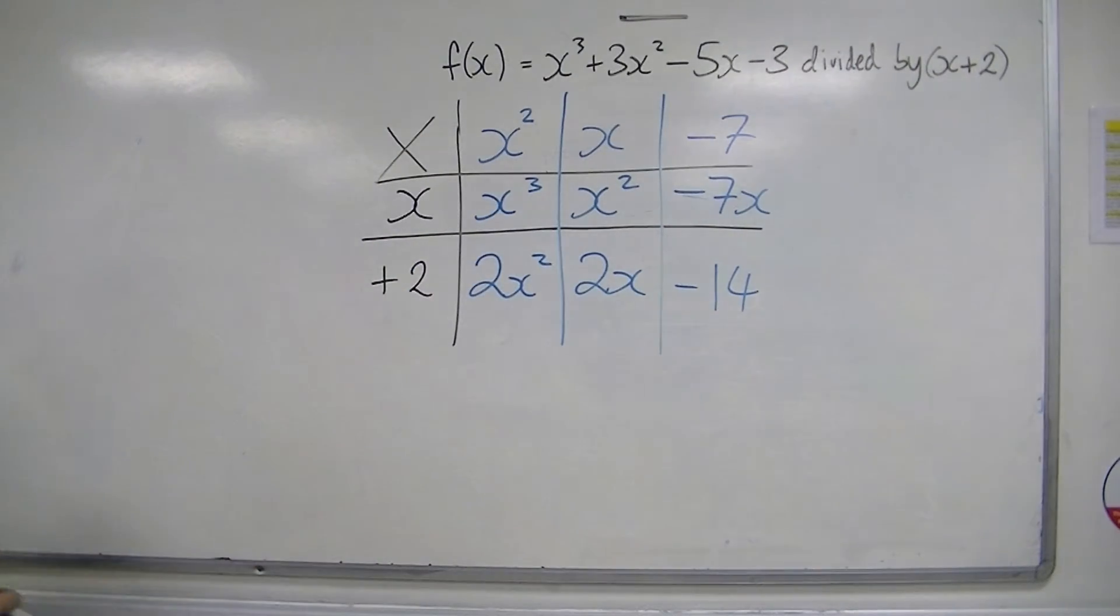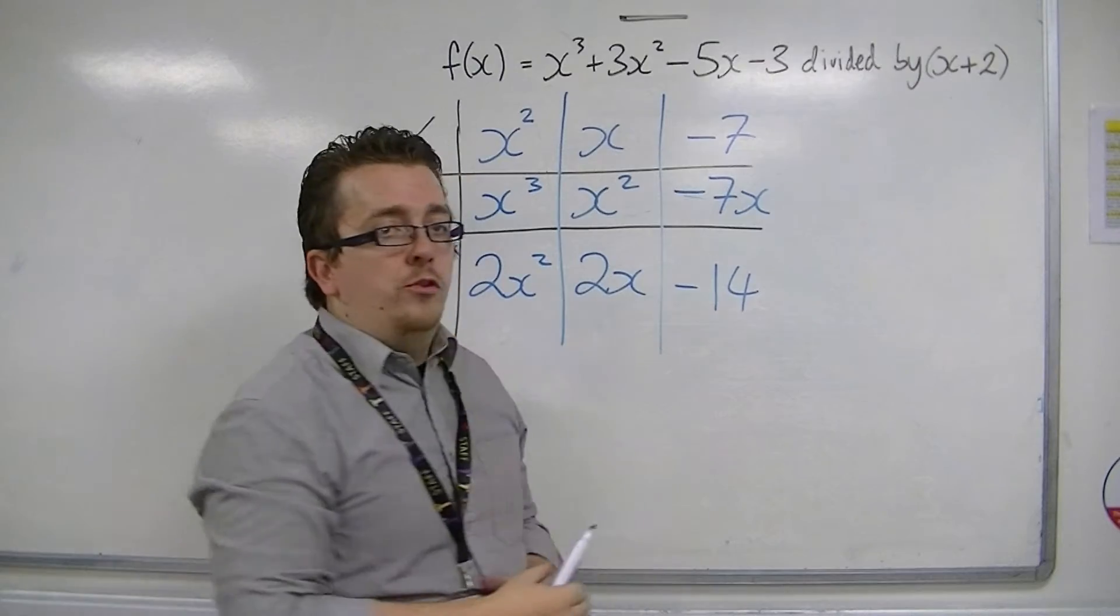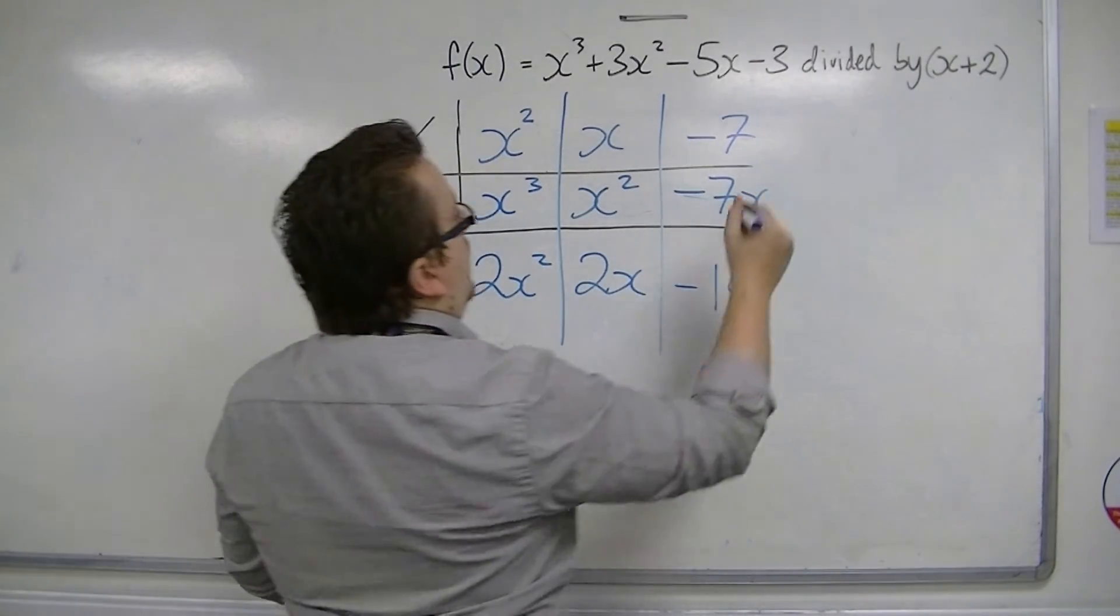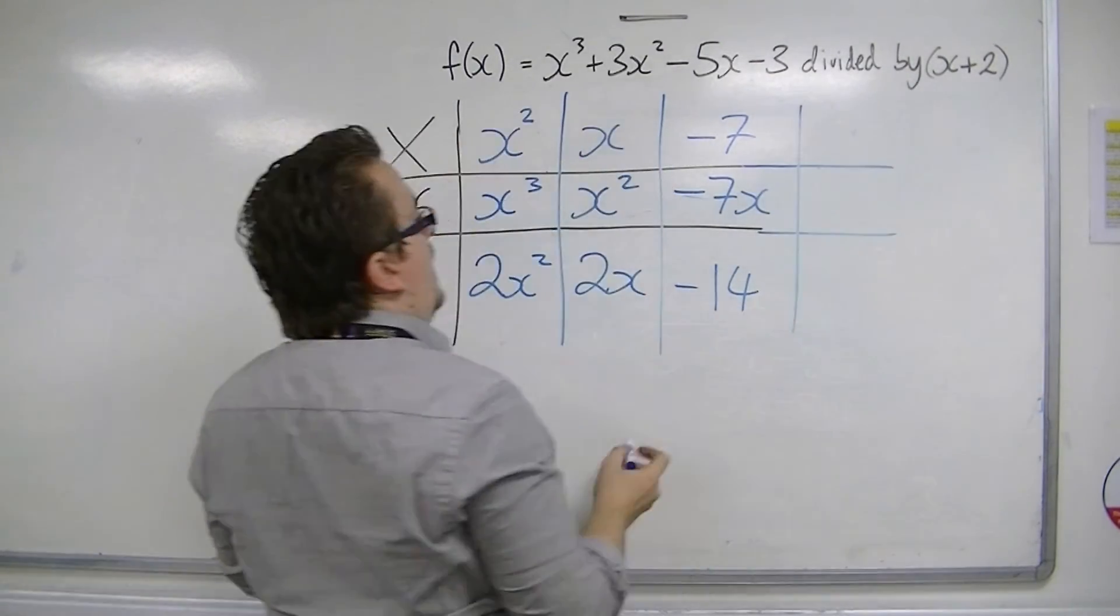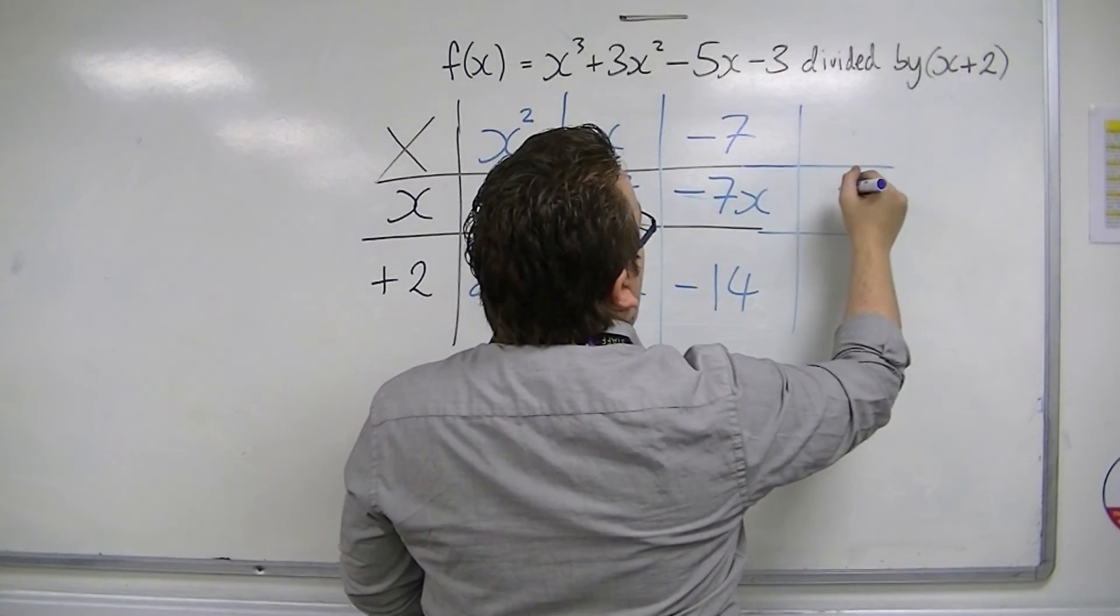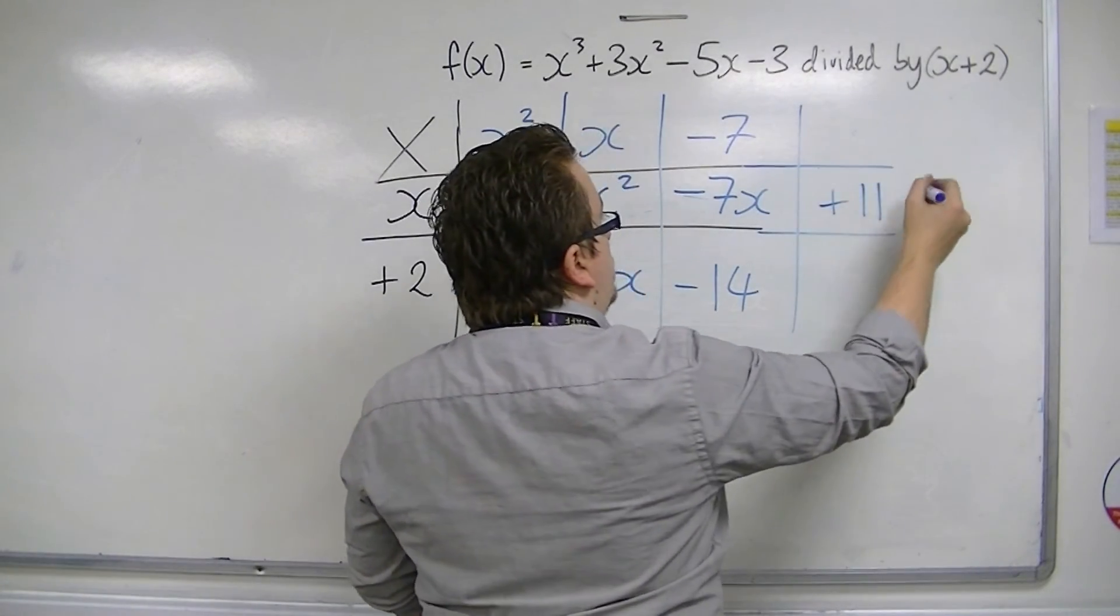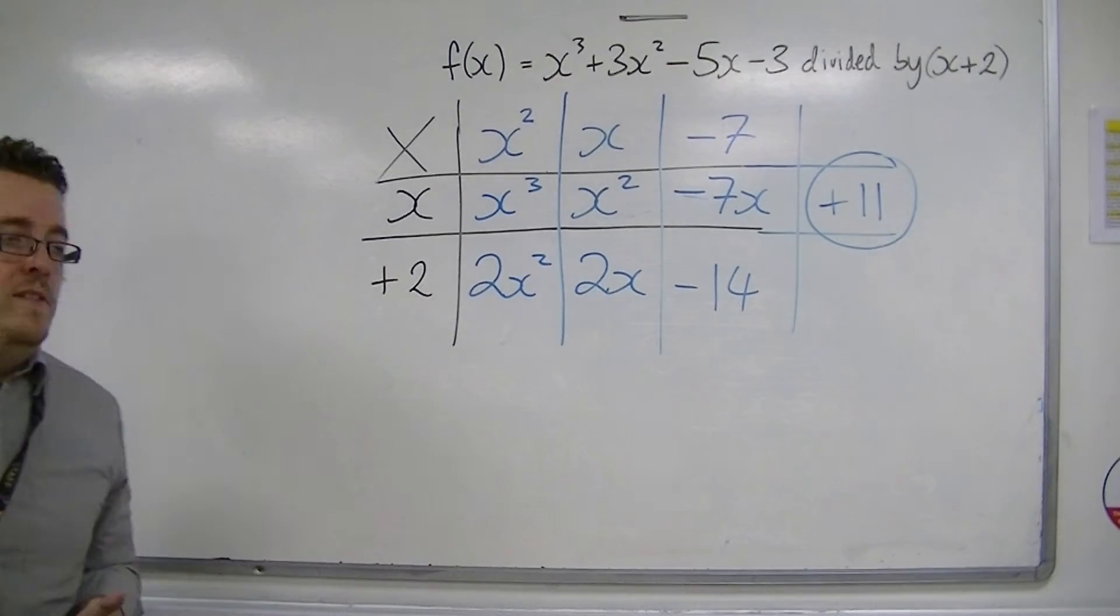When actually, I want minus 3. So, I would have to put here that, to get minus 3, I'm going to need a plus 11. And that is my remainder.